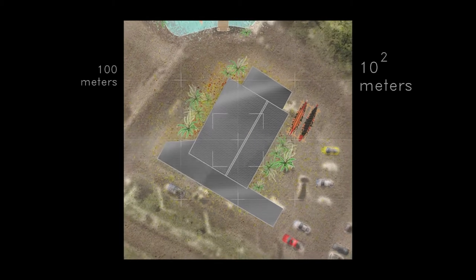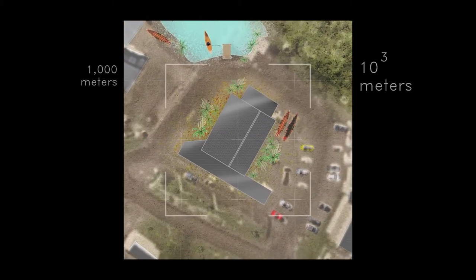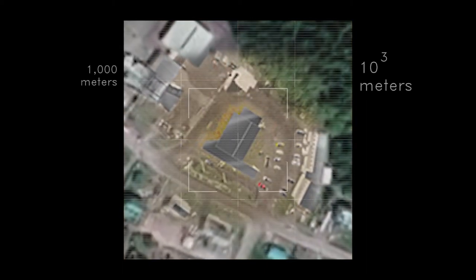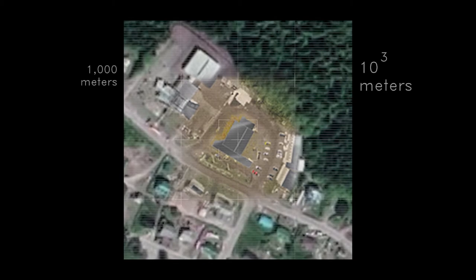This square is a kilometer wide, 1,000 meters, the distance a zodiac boat can travel in 10 seconds. We see Masset Village and Old Masset coming into view.